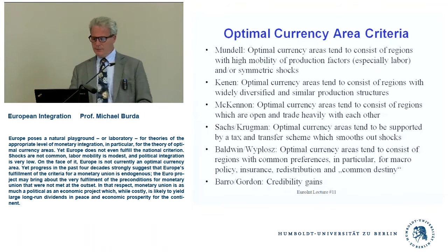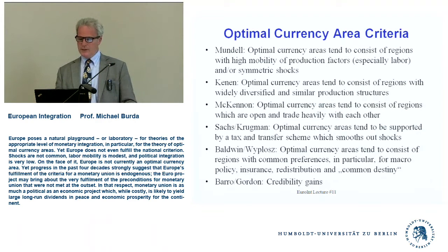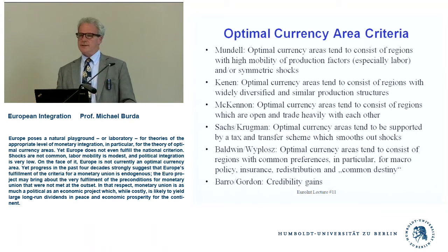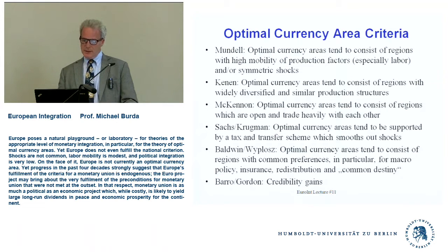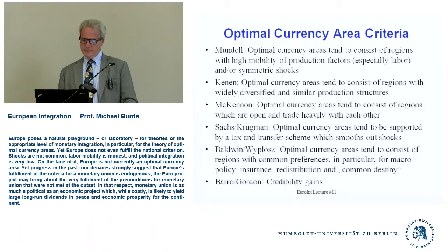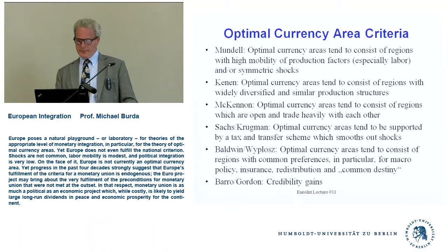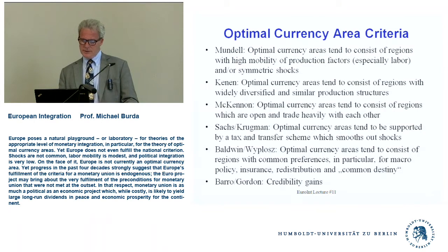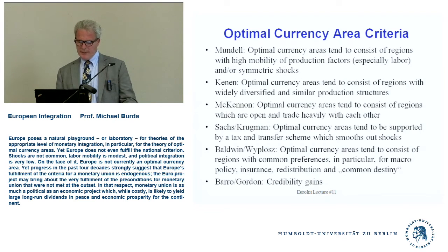These are the criteria we talked about — this is review. Mundell's two famous criteria: criterion one is the mobility of production factors, not just labor, also capital. Second is symmetry of shocks. Kenen's criterion of diversification is interesting. McKinnon talked about openness in trade and the lesser importance of non-traded goods. Baldwin and Wyplosz stress common preferences. Jeffrey Sachs and Paul Krugman have spoken about transfer systems — Europe doesn't have a transfer system comparable to what we observe in the United States or Brazil.